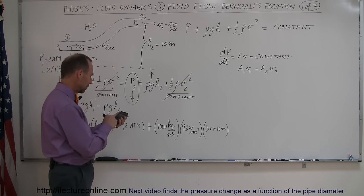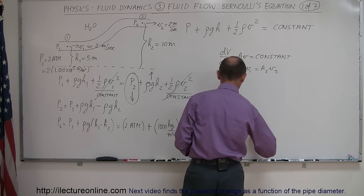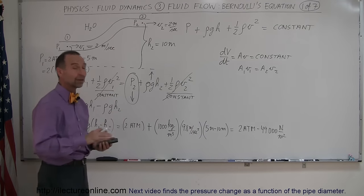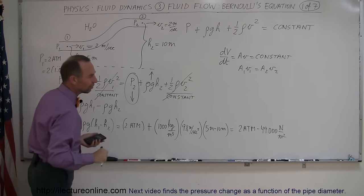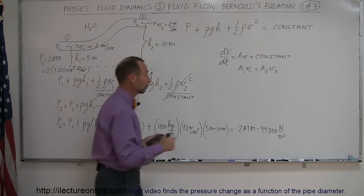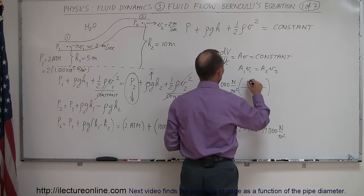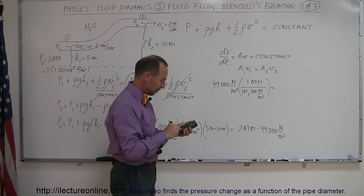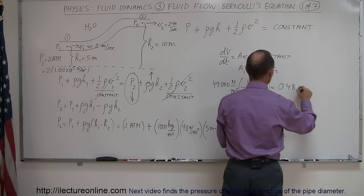So that would be 1,000 times 9.8. That would be 9,800 times 5 minus 10, which is minus 5. So times 5 equals, that's 49,000. So this is equal to 2 atmospheres minus 49,000 newtons per square meter. Now, there's a unit for that we call pascals. So you can say pascals are newtons per square meter. Now, if one atmosphere is 101,300 newtons per square meter, what is 49,000 newtons per square meter in terms of atmospheres? So let's do that real quick here. If we have 49,000 newtons per square meter, and we convert that to atmospheres, so 1 atmosphere is equal to 101,300 newtons per square meter. So we can see, if we take that, divide it by 101,300, and that would be 0.48 atmospheres.